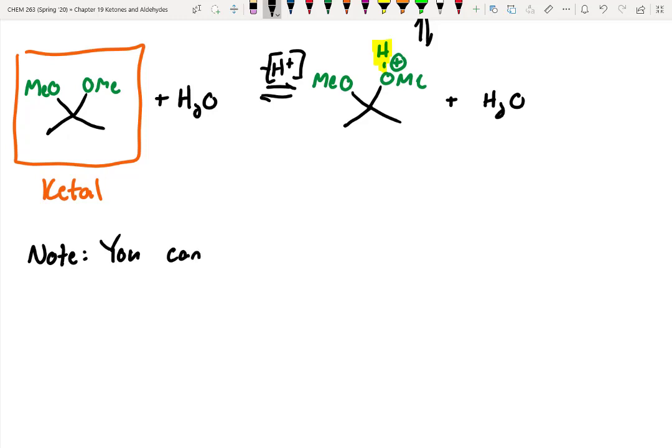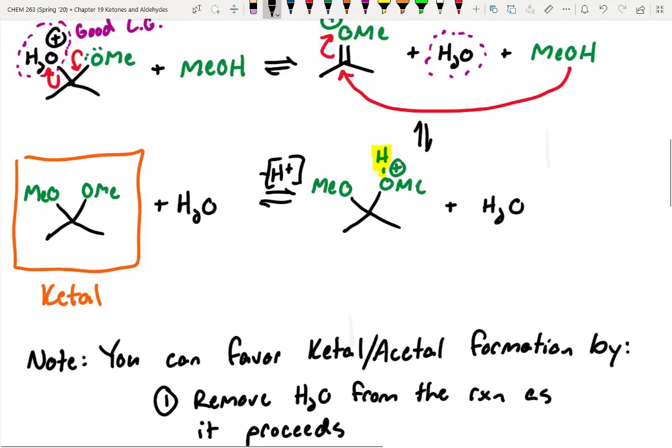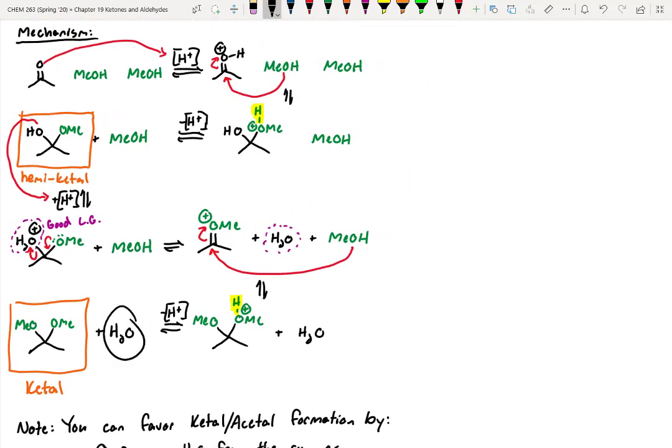So let's make a few notes here. So you can favor ketal or acetal formation one of two different ways. Number one is you can remove water from the reaction as it proceeds. So let's take a look at this. If we look at the overall equilibrium, water is one of our products. So if we keep on removing water from the reaction, we're going to continue to push the equilibrium forward to our ketal side. So we're removing one of our products to shift the equilibrium to the product side. So that works well.